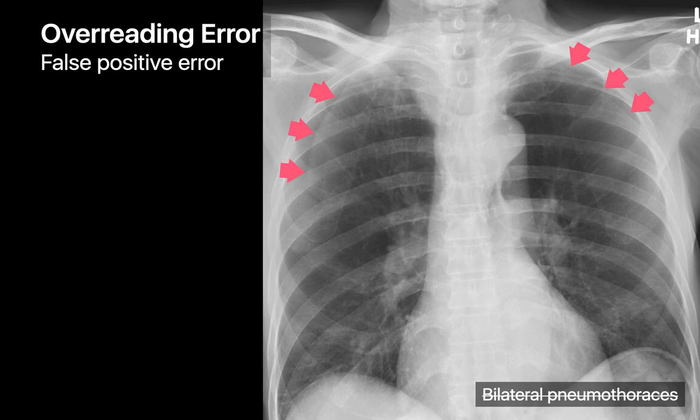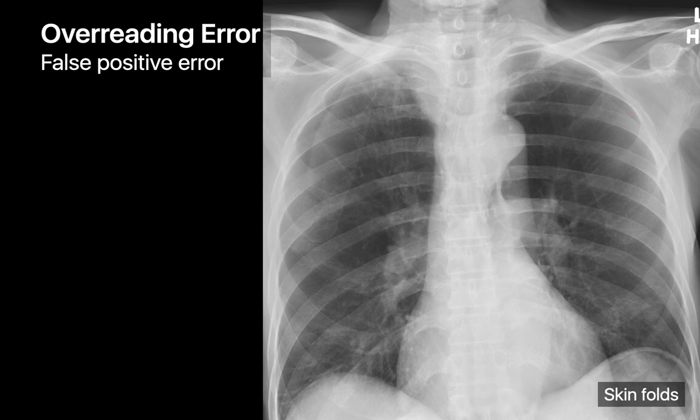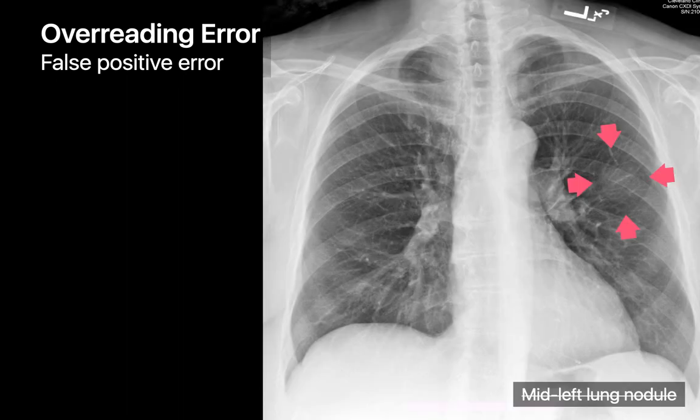Over-reading errors are false positive errors where a normal finding is interpreted as abnormal. Like this case that was thought to represent bilateral pneumothoraces but was just overlapping skin folds, or this case of an apparent lung nodule that was actually a non-metallic chest port in the patient's left chest wall.